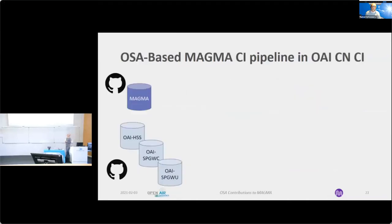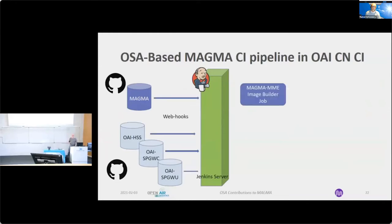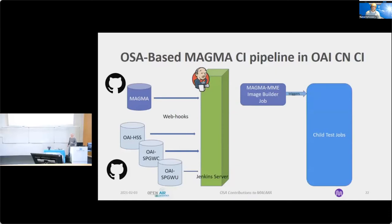The CI always starts from the MAGMA repositories, and also the OAI GitHub repositories. We link to a Jenkins server hosted in our OpenShift cluster at Eurecom, hooked with webhooks. That means that any time you have a pull request, it triggers a job where we build an image to test. Once the image is built and validated, we call a child job to test with other components and stimuli.